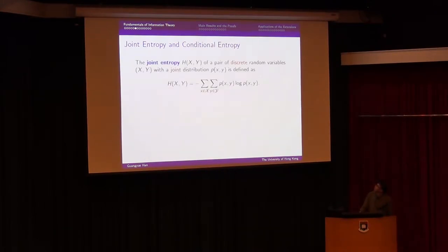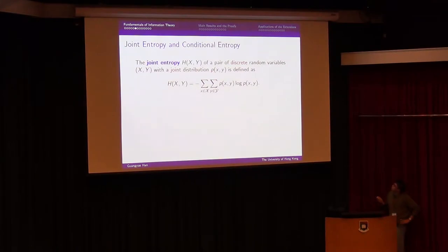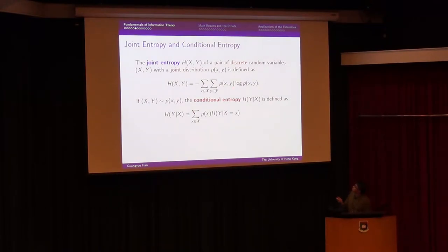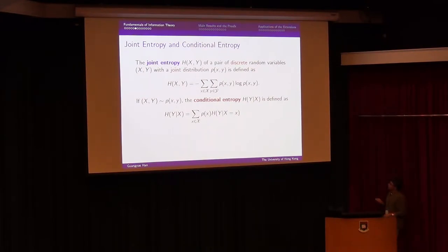When we know the entropy for one random variable, we can also look at the entropy for a couple of random variables. For instance, the joint entropy for two random variables is defined similarly as the negative summation of p(x,y) log p(x,y), using the joint probability mass function. We can also define the conditional entropy H(Y|X), which is essentially calculating the entropy of Y according to the conditional law of Y given X.